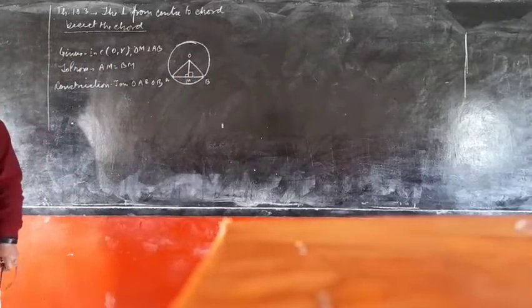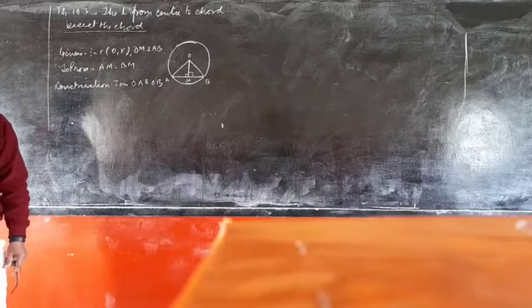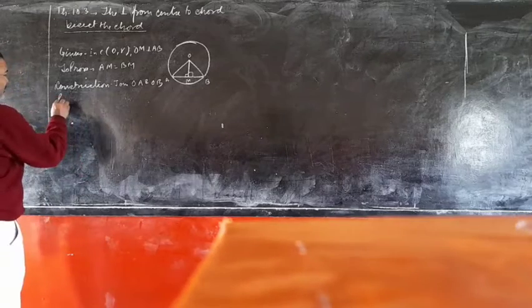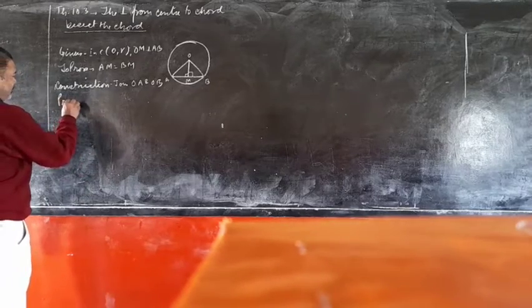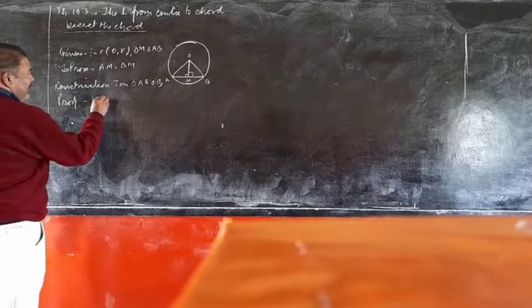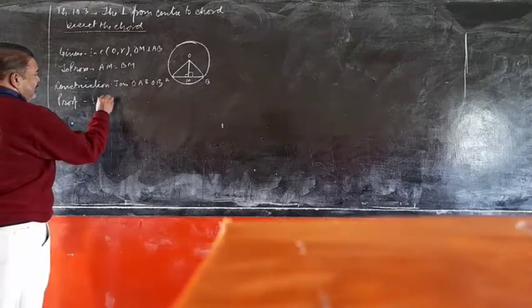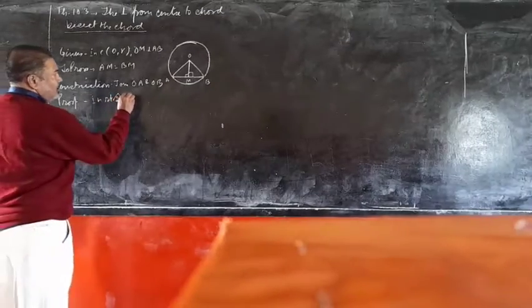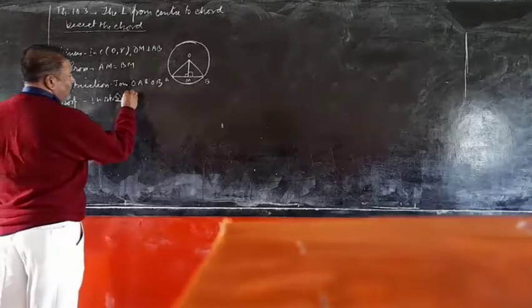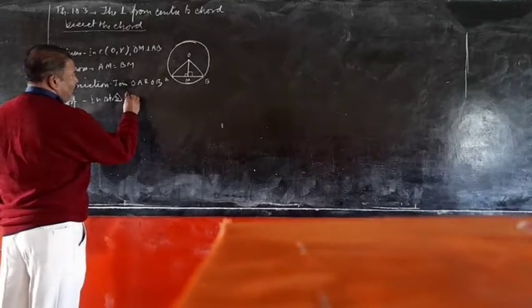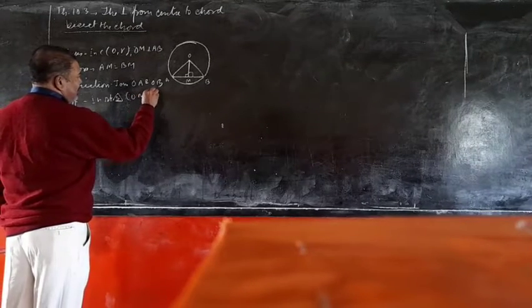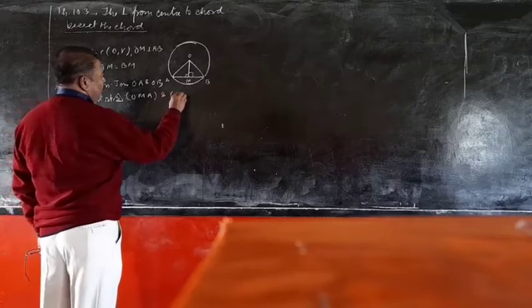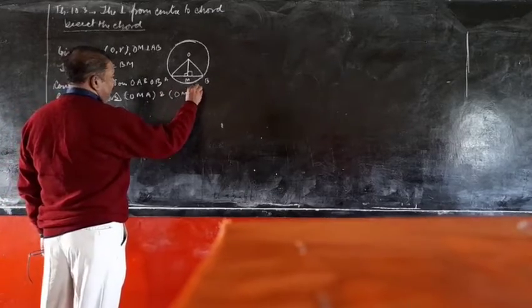Now we have two triangles. The next step is the proof. Consider triangle OMA and triangle OMB.